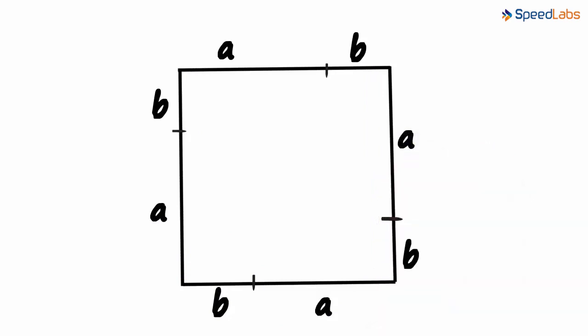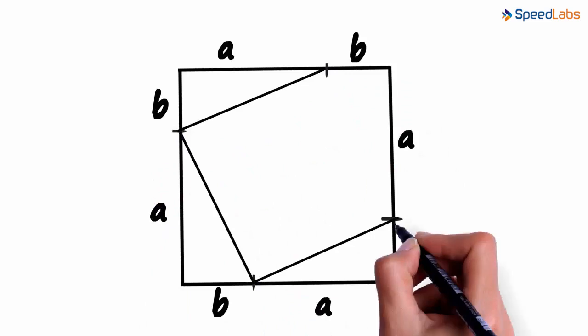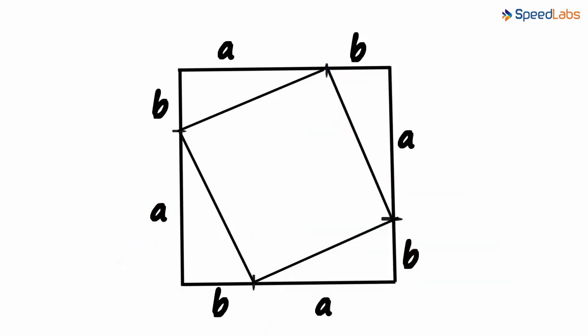We can see that we have four points, one on each side. This time we join the adjacent points. If you draw this on a piece of paper, you will notice that the figure formed inside is a square.